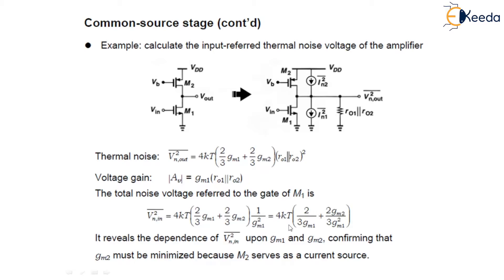Solving it further, we can take gamma out as a common factor from both terms, and we can write 4KT times gamma times (2/3 GM1 plus 2/3 GM2) divided by GM1 squared. This reveals the dependence of the input-referred voltage upon GM1 and GM2.